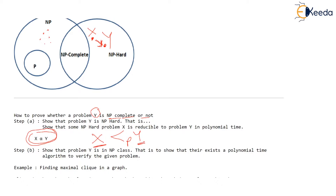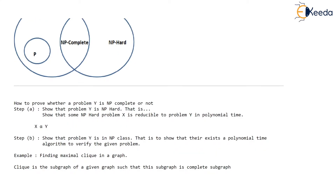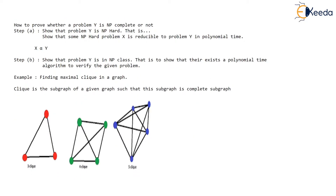The second step: you wanted to show Y is NP-complete. Till now you have shown that Y is NP-hard. To show that Y is NP-complete, you also have to prove that Y is NP. It must be both NP and NP-hard. Show that there is a polynomial time algorithm for which verification is possible for this problem Y — show that there exists a polynomial time algorithm to verify the given problem. I know these points were covered in the previous video, but the topic is so tricky that I don't mind repeating a few facts.